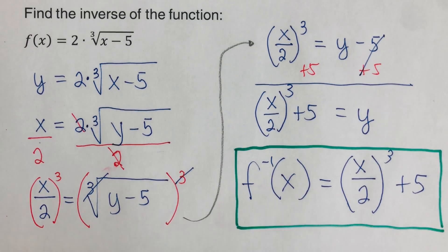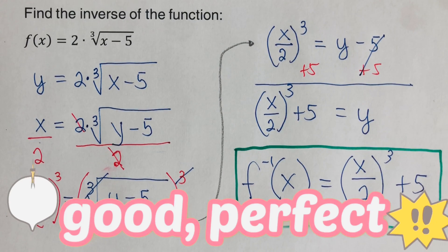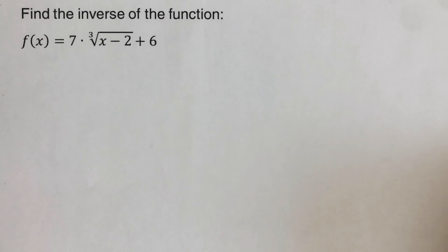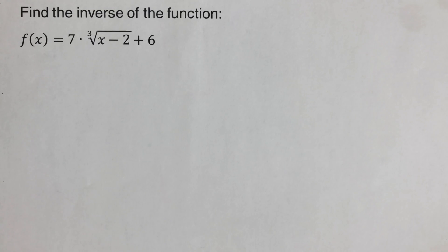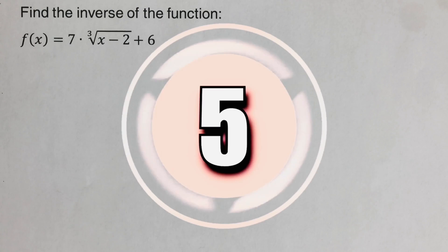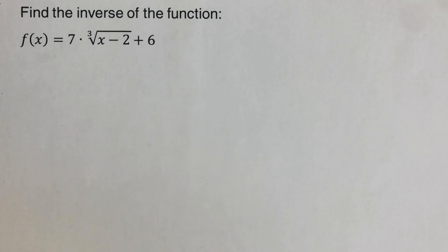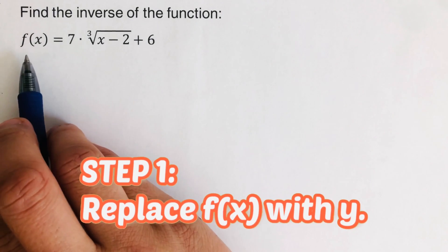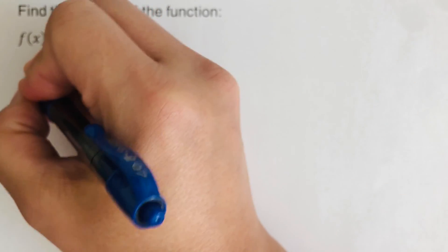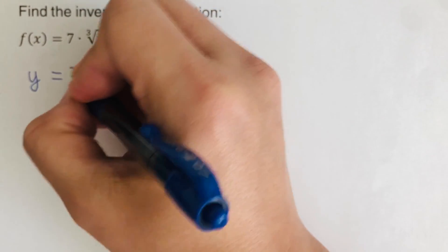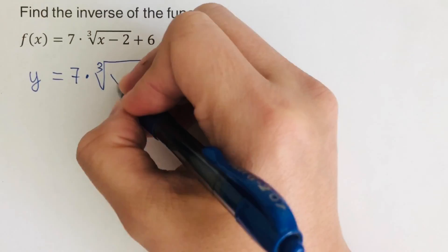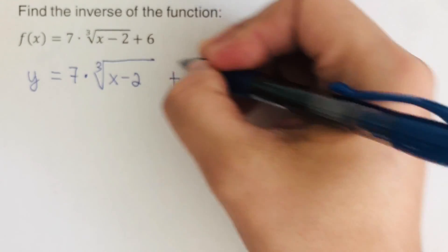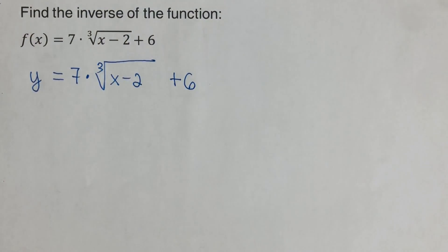Good, perfect. Now let's move on to the third example. I encourage you to pause this video and try this problem on your own, then check your answer. The first step is to replace f(x) with y, so: y is equal to 7 times the cube root of x minus 2, plus 6. The 6 is outside the radical.